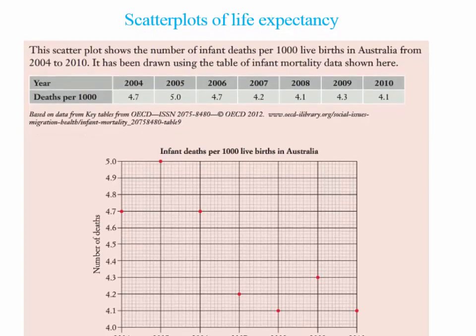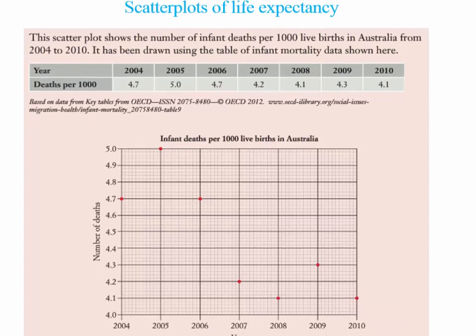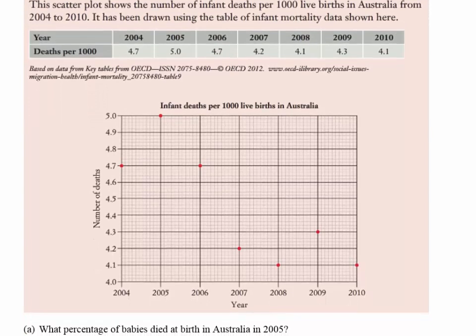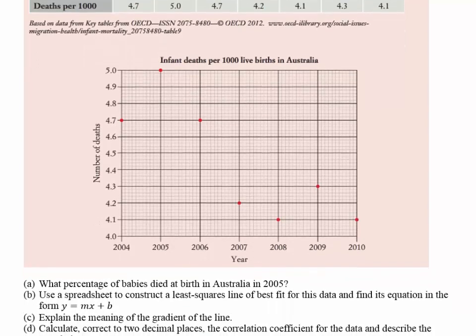Here is a scatter plot that shows the number of infant deaths per 1000 live births in Australia from 2004 to 2010. It has been drawn with a table and we've drawn a scatter plot so we can have a look at it. You can see that there is an anomaly in 2005, but generally the death rate is slowly decreasing.